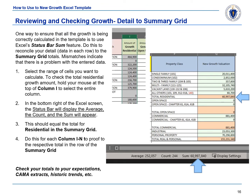When reviewing and checking the growth detail to the summary grid, one way to ensure that all growth is being correctly calculated is to use Excel's status bar sum feature. Do this to reconcile your detail to the summary grid totals — mismatches indicate a problem with the entered data. First, select the range of cells you want to calculate. To check the total residential growth amount, hold your mouse at the top of column I to select the entire column. In the bottom right of the Excel screen, the status bar will display the average, the count, and the sum. This should equal the total for residential new growth in the summary grid. Do this for each column I through N to prove to the respective total in the summary grid. Lastly, check your totals to your expectations, your CAMA extracts, or your historic trends.